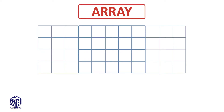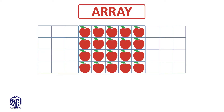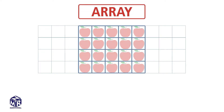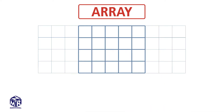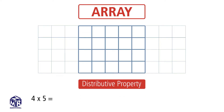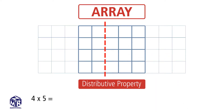Look at this rectangle that we drew on grid paper. It looks like an array, doesn't it? There are four rows of five. Do you remember how we break apart an array into two smaller arrays? We use the distributive property. We draw a vertical line to show how we can break apart this 4 by 5 array into two smaller arrays.